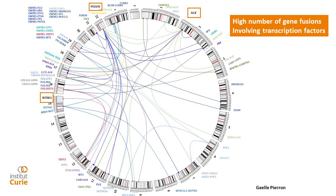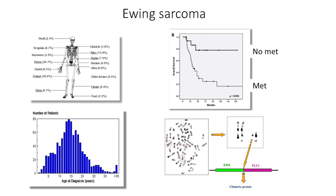I was a young PhD student at the time — I'm not a PhD student anymore, but I'm still young. And this is Ewing sarcoma, which is mostly a bone tumor that can involve any bone in the organism.